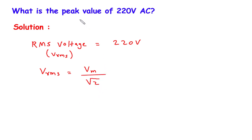Now here the value of VRMS is given and we have to find VM. So VM is equal to root 2 times VRMS. It will be root 2 multiplied by VRMS which is 220.